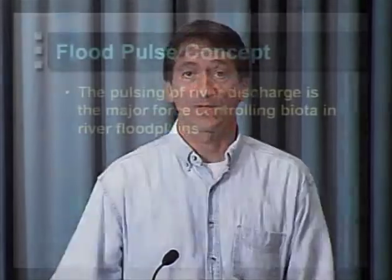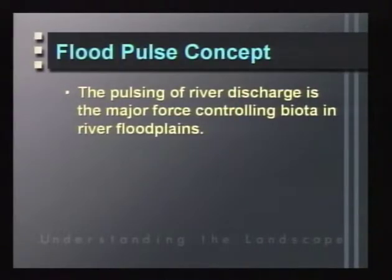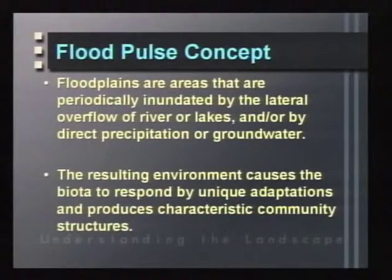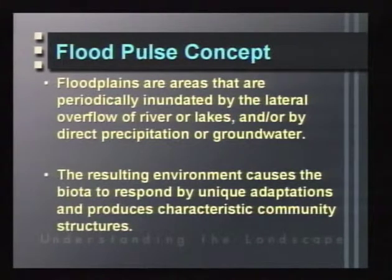This has led to the flood pulse concept. The pulsing of river discharge is one of the major forces controlling biota in river floodplains. These pulses are predictable — rivers like the Mississippi and Amazon flood on predictable schedules, and organisms that evolved in these ecosystems have developed life history strategies to take advantage of flooding events. Floodplains are areas periodically inundated by lateral overflow, direct precipitation, or groundwater rise during flood events.